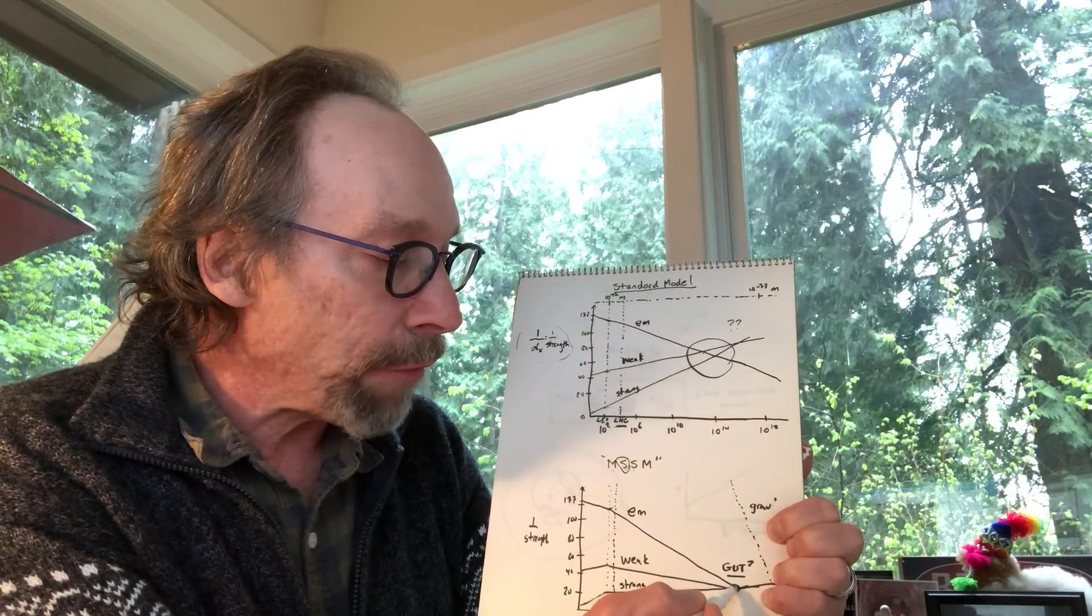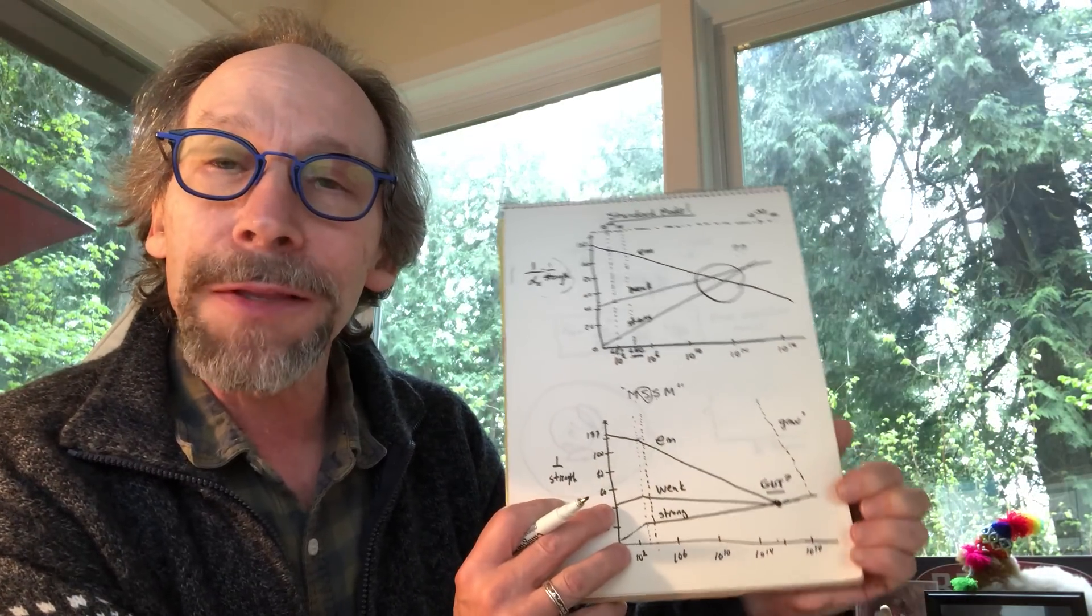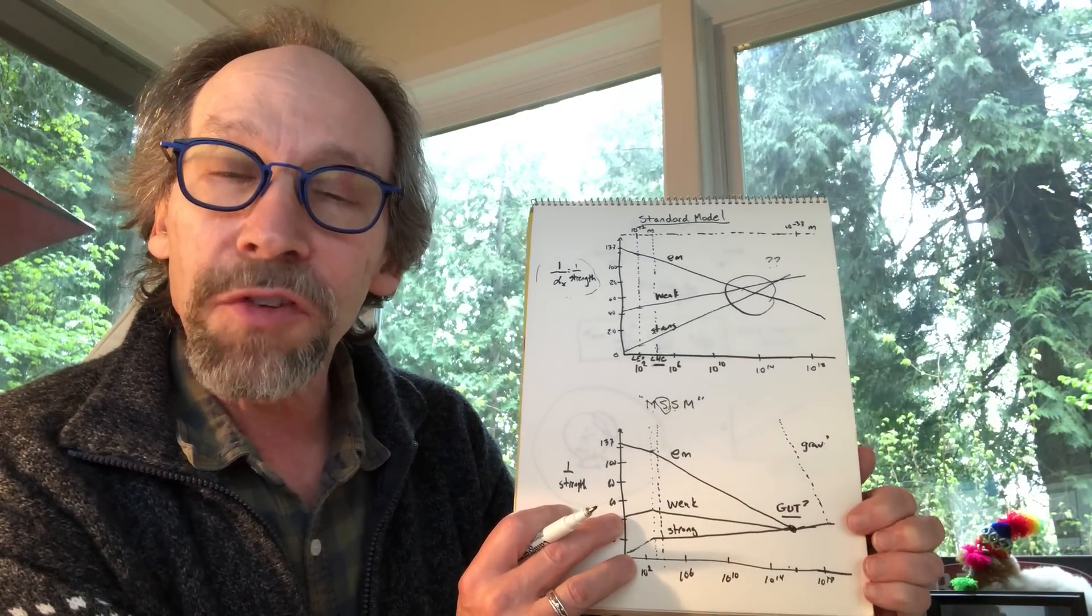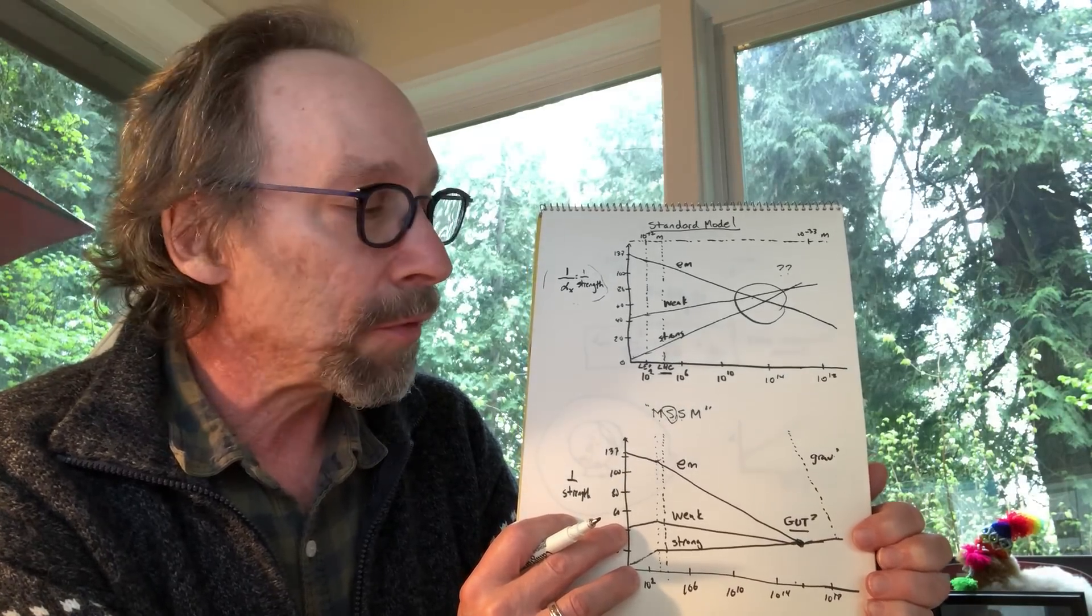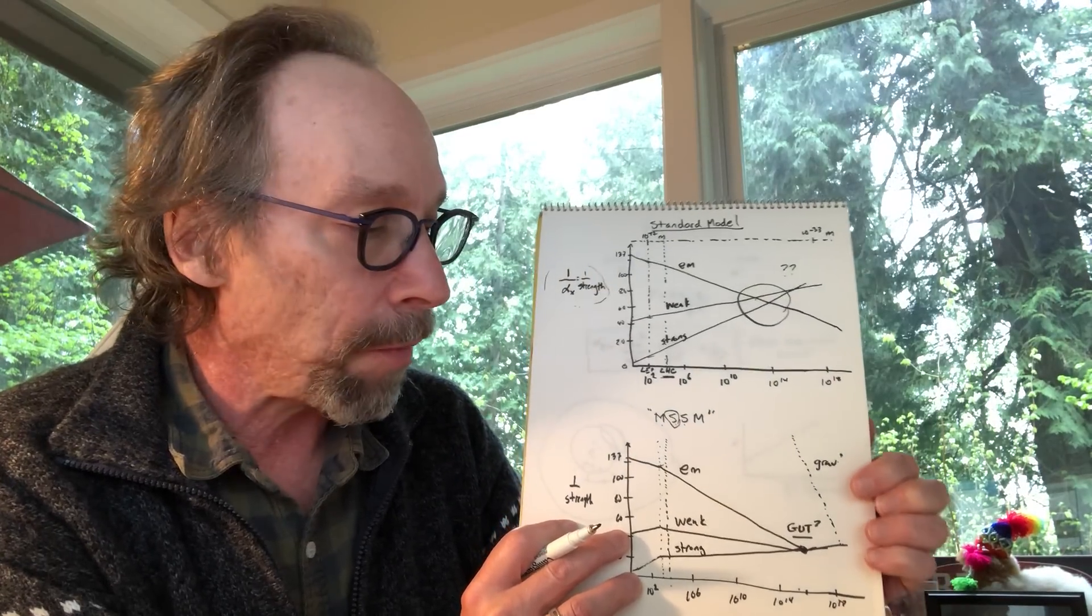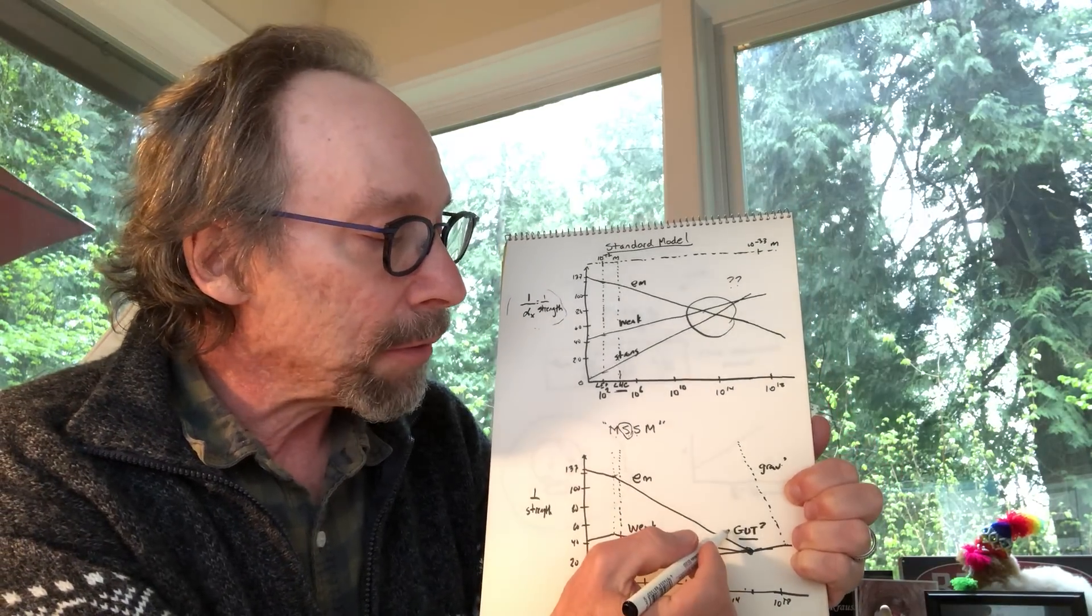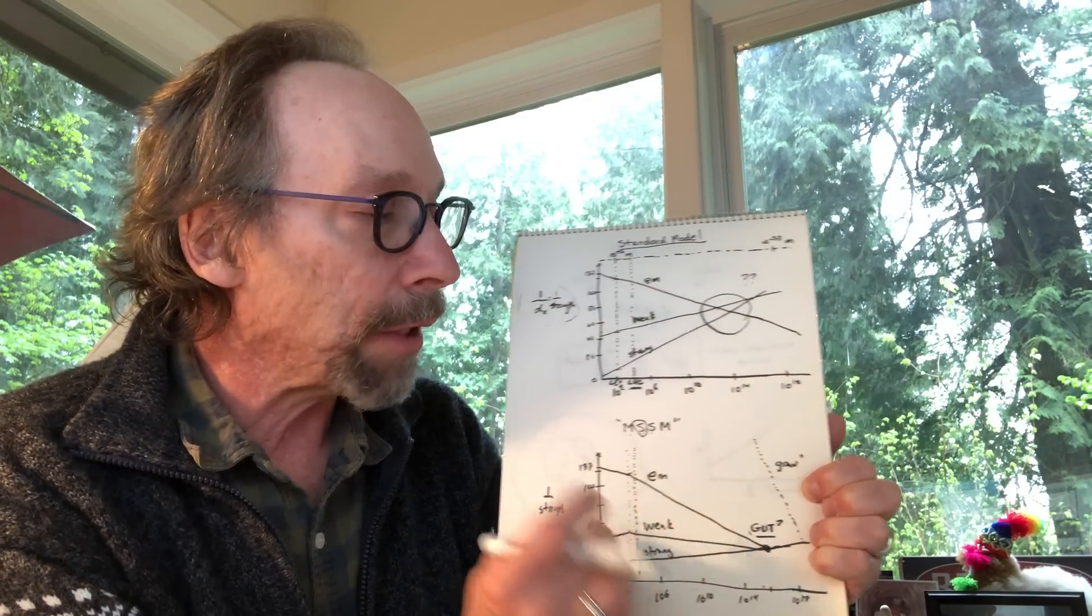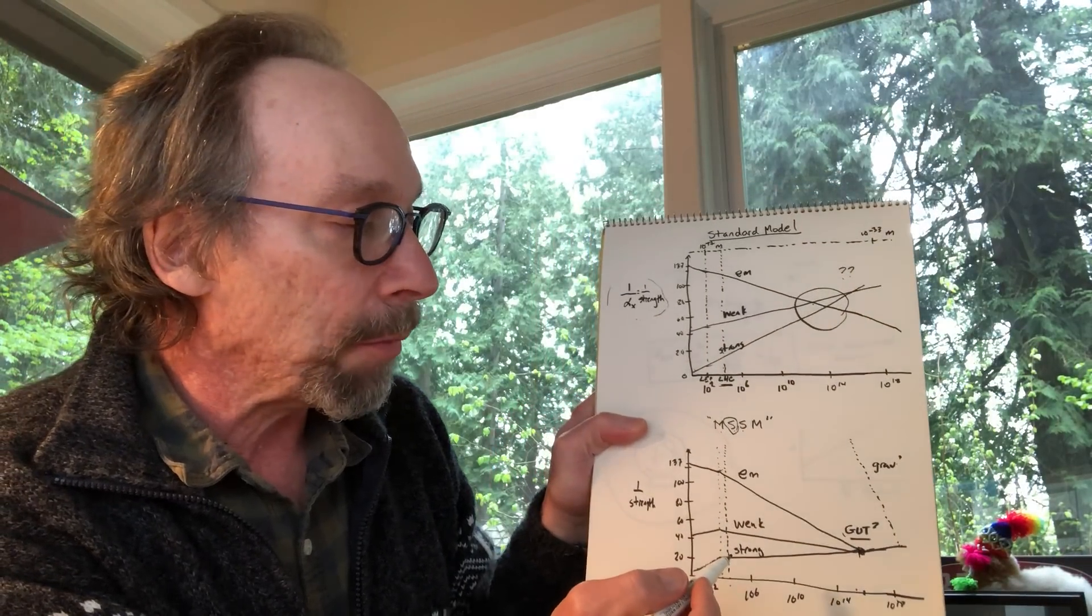And when you plugged it in, it turned out magically all the forces came together at an energy scale of something like 16 orders of magnitude more energetic than the energy associated with a proton, or 16 orders of magnitude in distance scale smaller than the size of a proton. And that led to the realization that maybe grand unification, as it became called, grand unified theories, might be related to supersymmetry.